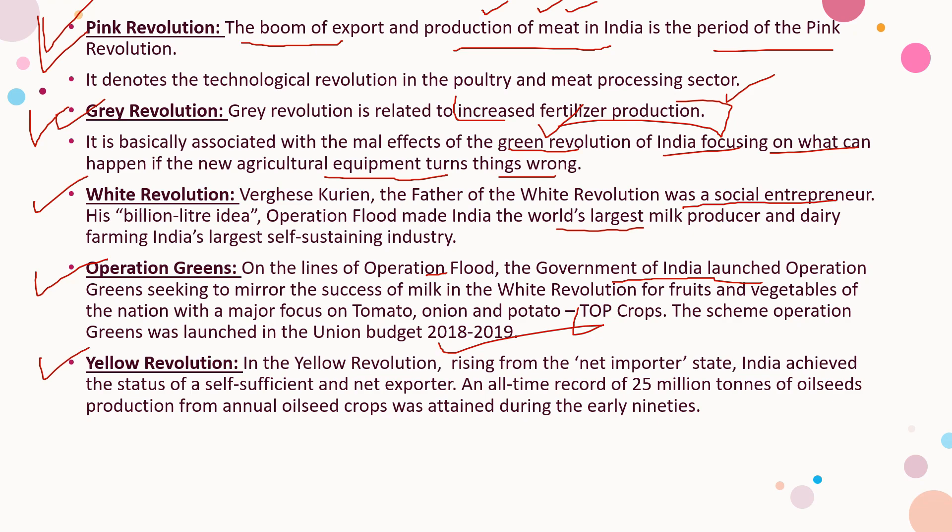In the Yellow Revolution, rising from a net importer state, India achieved the status of self-sufficient and net exporter, with an all-time high record of 25 million tons of oilseed production from annual oilseed crops during the early 1990s. The Yellow Revolution changed India's status from an importer to an exporter of oilseeds. All these definitions are very important — you can write them down or take a screenshot.